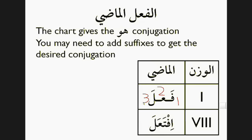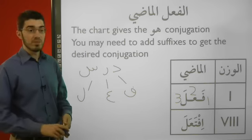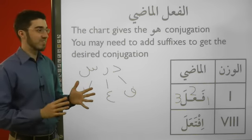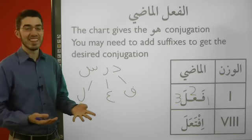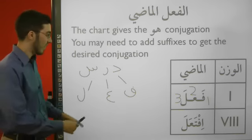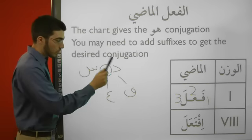For example, let's take the verb darasa. We're going to call the dal the fa in darasa, the ra the ayn in darasa, and the sin the lam in darasa. This can lead to some confusion sometimes when students don't pay attention. What can happen is the teacher says, 'Everyone look at the ayn in darasa,' and one student says, 'There is no ayn in darasa.' And you say, 'No, not the real ayn — the middle root letter, i.e. the ra.' So please watch out for that — these are shorthands.